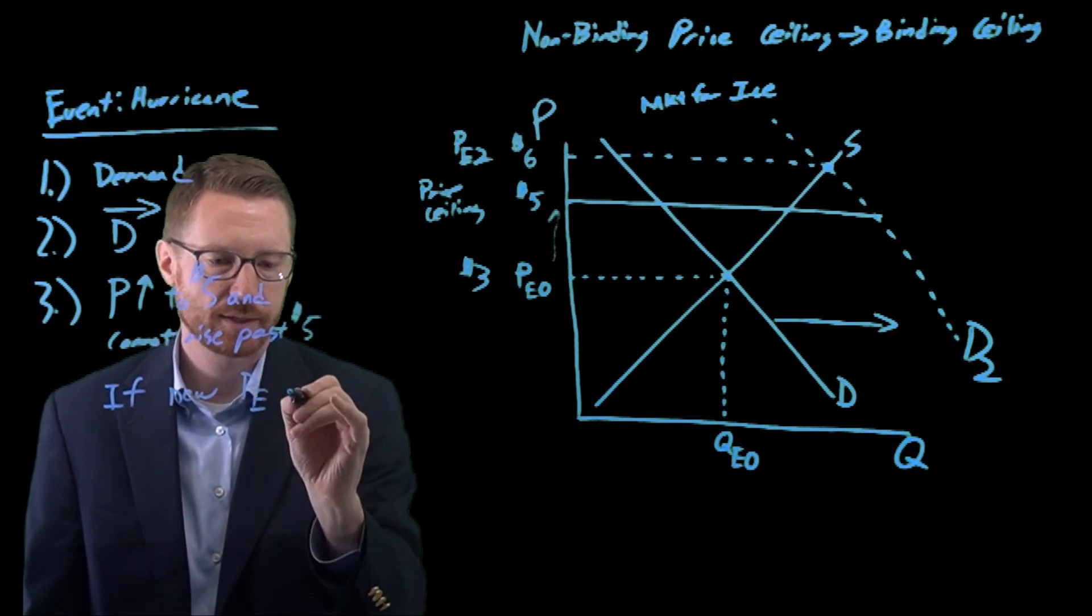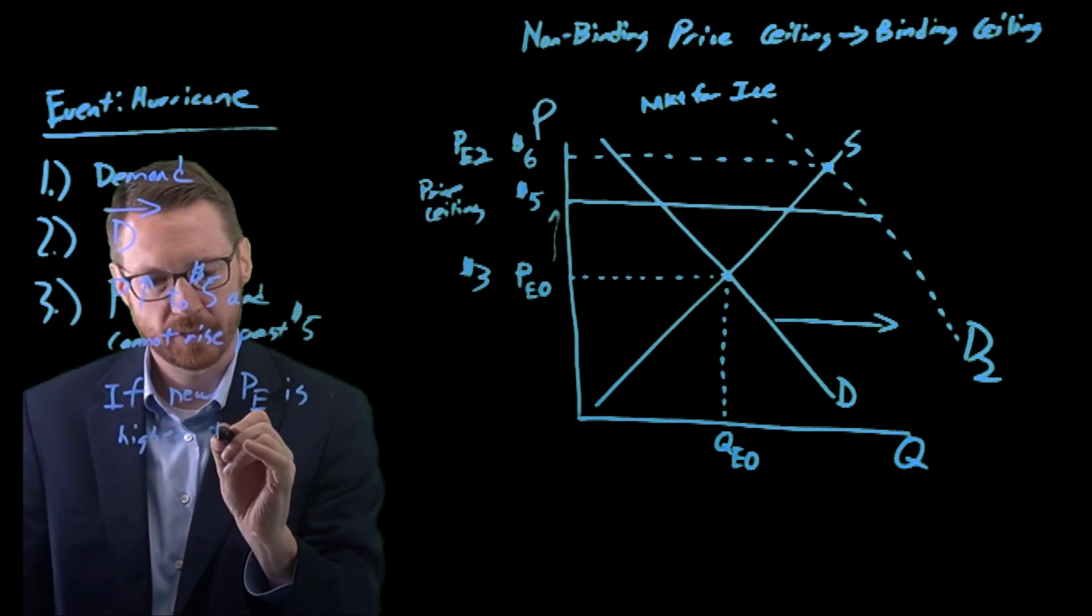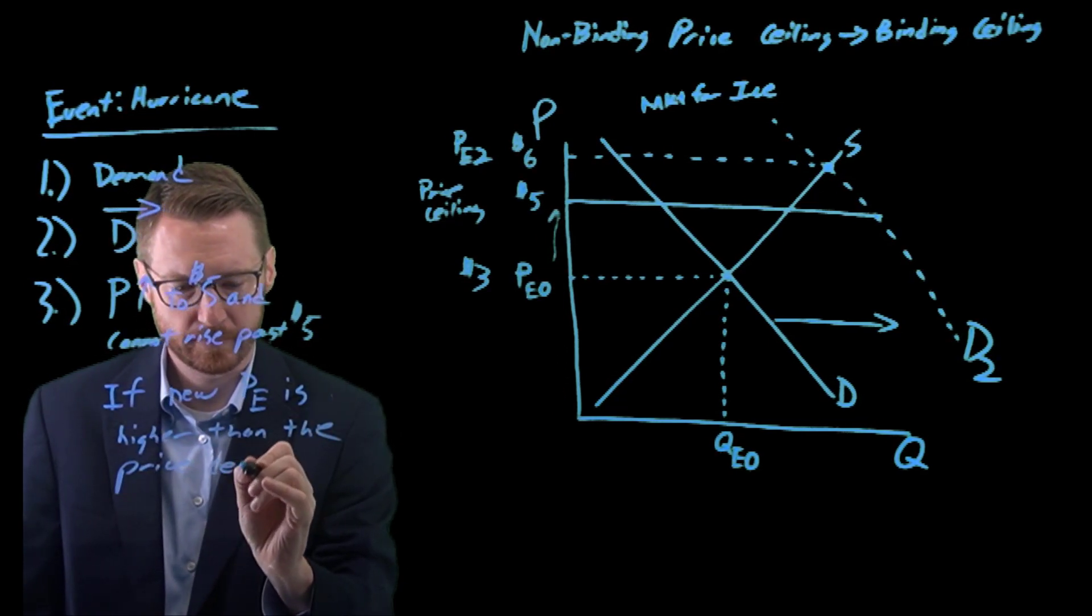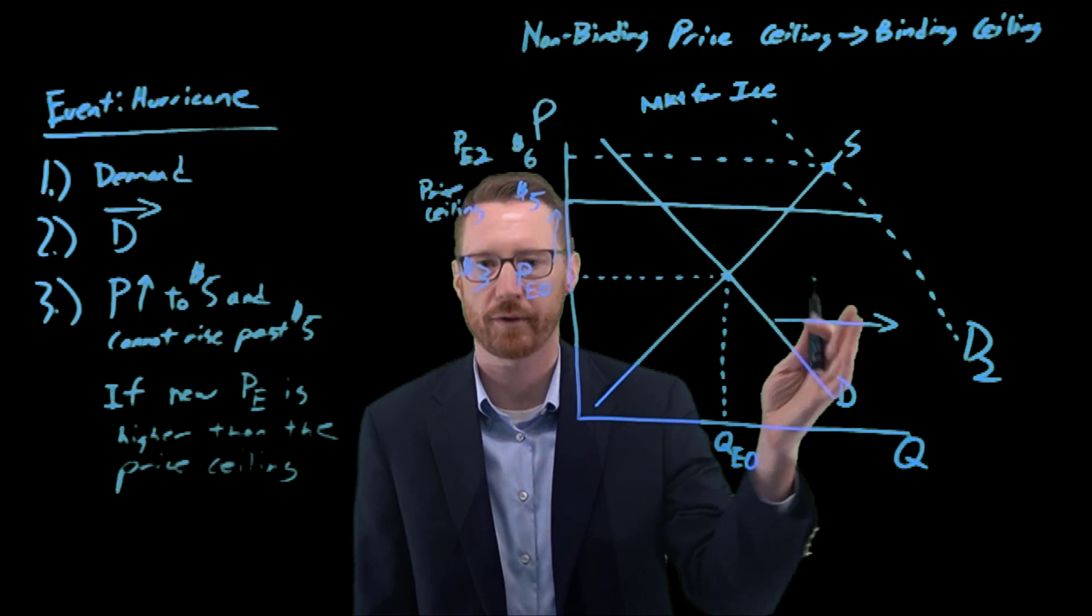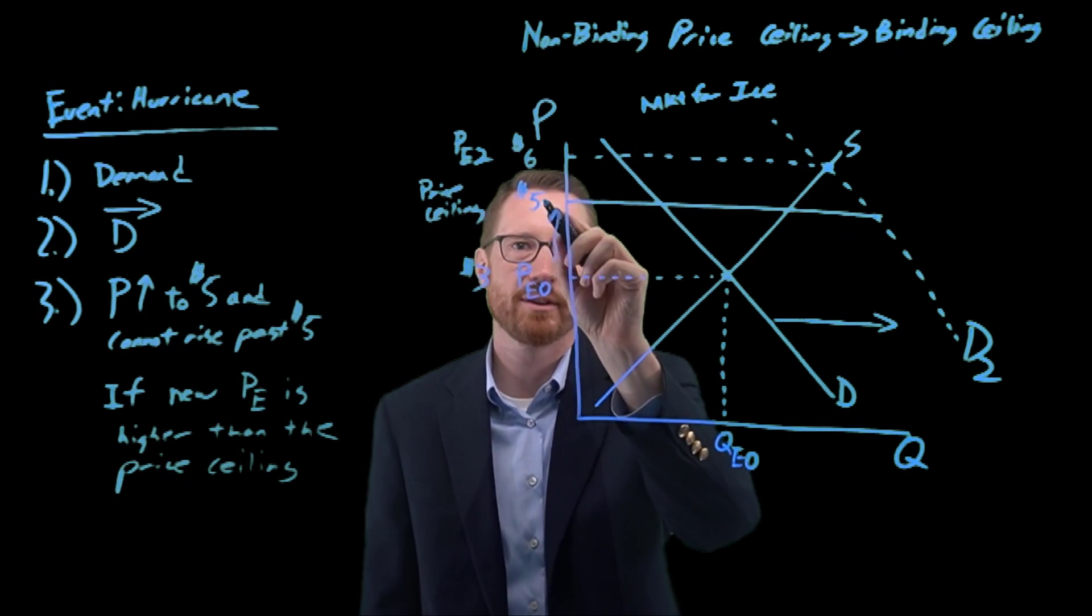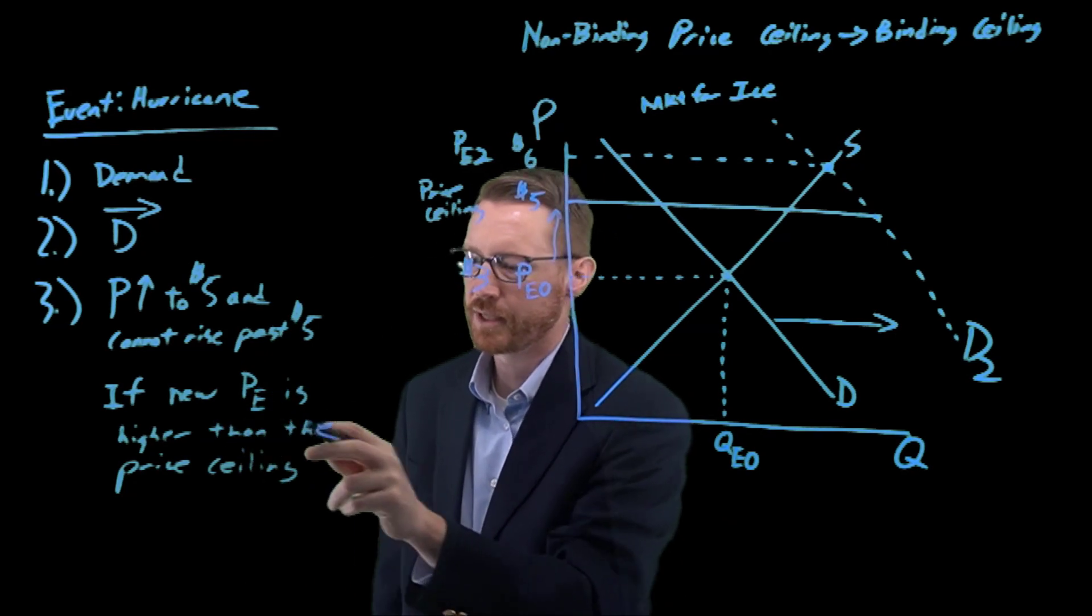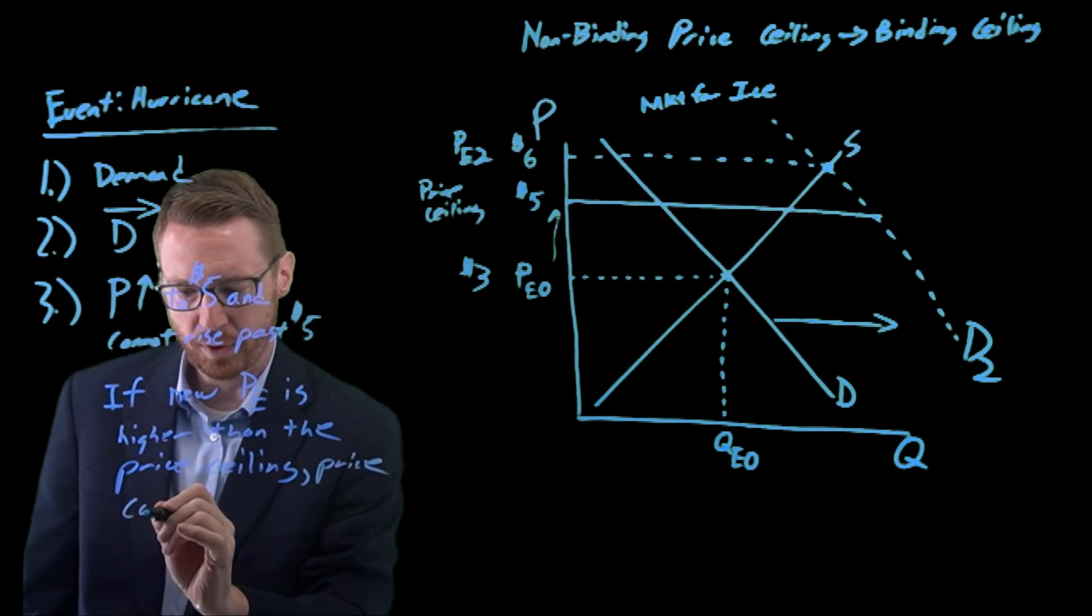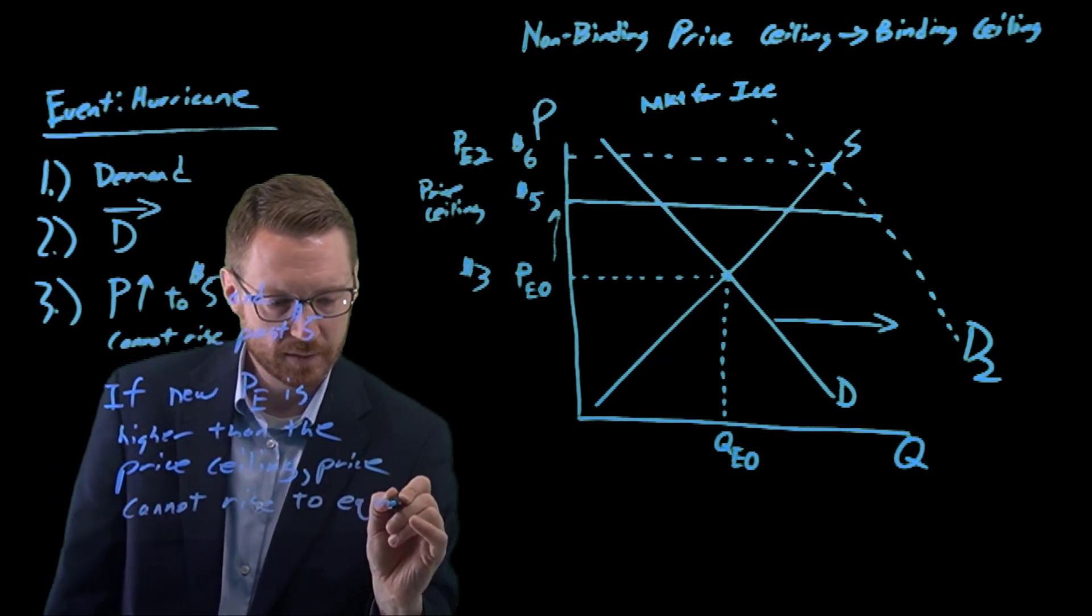If our new equilibrium price is higher than the price ceiling, as we set it up and drew this shift for a hurricane shifting demand for ice, now that new equilibrium price is higher than the five dollars. We think it would be something like six dollars. If the new equilibrium price is higher than the price ceiling, price cannot rise to the equilibrium.